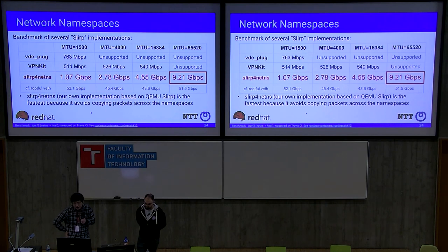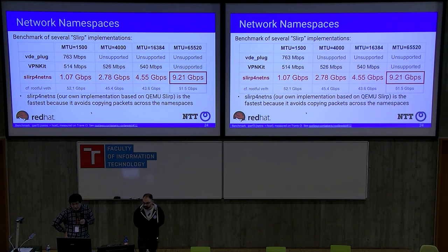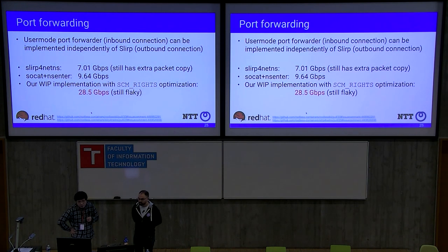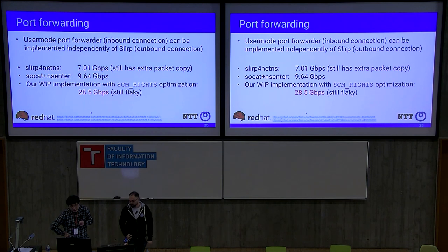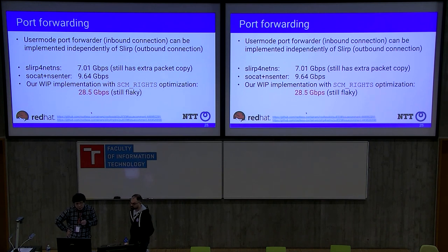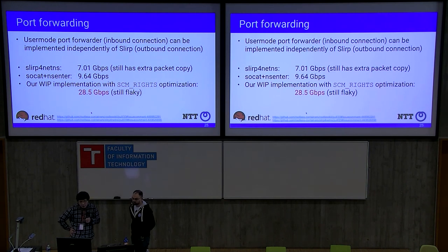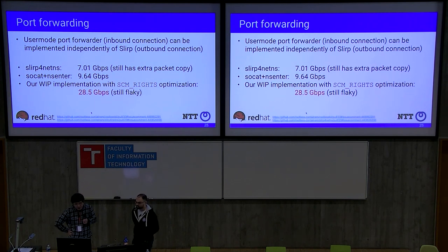We have several slirp implementations, but slirp4netns — our own implementation based on QEMU slirp — is the fastest because it avoids copying extra packets across namespaces. slirp4netns can reach more than 9 Gbps when MTU is about 64 KB. We also need a port forwarder for inbound connections — even the built-in port forwarder in slirp4netns can reach 7 Gbps, and using an alternative implementation we can reach more than 9 Gbps, while our optimized implementation can reach 28 Gbps.